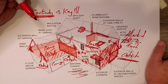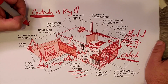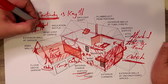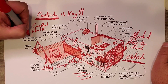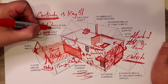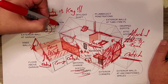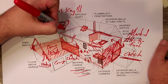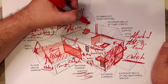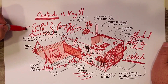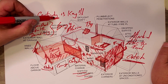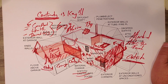The tighter I can get the house, it is solving for comfort — because we don't have those drafts — but it's also solving for health problems and durability problems. If I solve for these three, then I solve for energy efficiency, and I get that as a byproduct of these three good decisions. Continuity is key for a number of reasons.